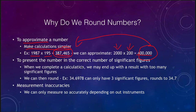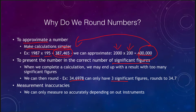We also round numbers to present them in the correct number of significant figures. We might go through a calculation and end up with our calculator giving us all sorts of decimal places that we know are not significant. For example, if we get an answer of 34.6978 and find that it is only supposed to have three significant figures, we use rounding. Because the figure to the right of where we're rounding is five or greater, we round up to 34.7.